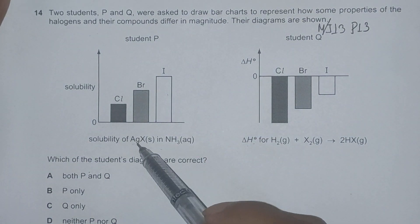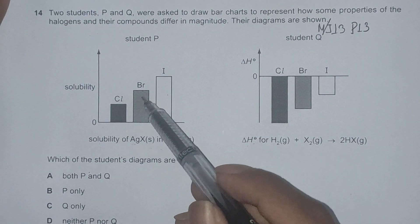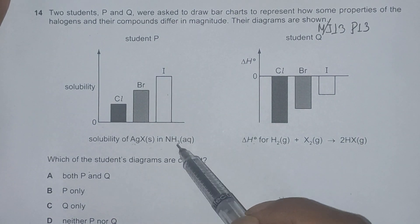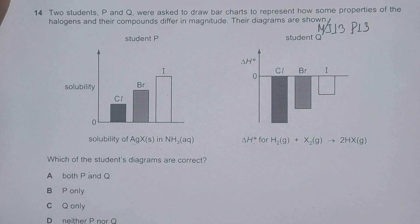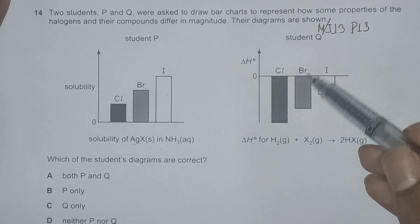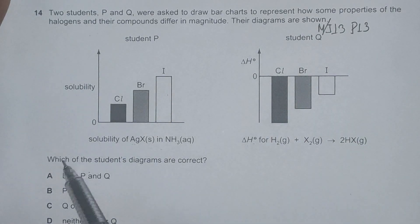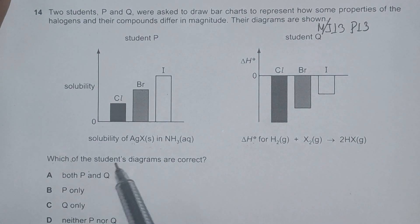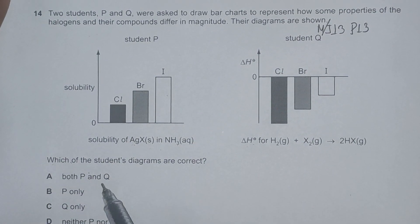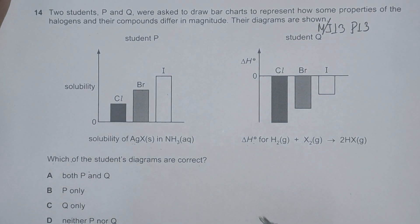Student P has drawn solubility of silver chloride, silver bromide, silver iodide in aqueous ammonia. And student Q has drawn bar chart for enthalpy change of reaction of halogens with hydrogen. We've been asked which of the students' diagrams are correct. Both P and Q, P only, Q only, neither P nor Q.